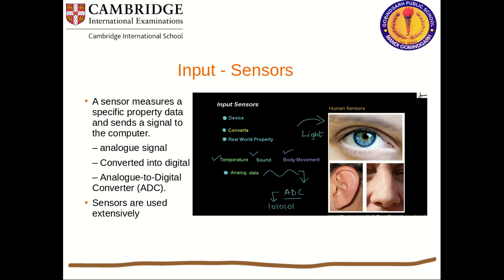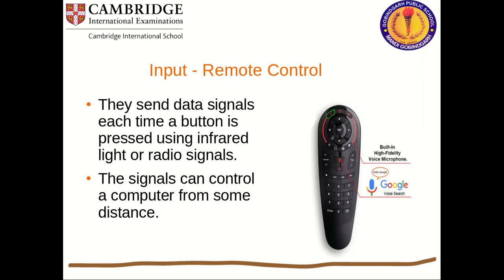The sensor measures a specific property and sends signals to a computer. Analog signals are converted to digital using an Analog-to-Digital Converter (ADC). Input control devices — such as remote controls — also act as sensors; they send data signals each time a button is pressed, using infrared light or radio signals to control a computer from a distance.